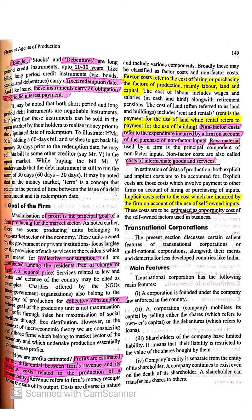Yahaan par implicit cost ko bhi hum consider karenge. Jab hum cost ki baat kar rahe hain, to cost ka matlab hota hai economic sense mein: explicit cost plus implicit cost. Implicit cost ko hum opportunity cost bhi bolte hain. Toh yeh humne cost ke concept mein discuss kiya hua hai. Thank you so much.